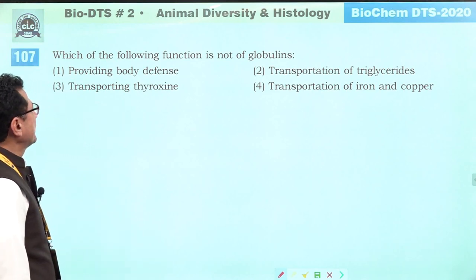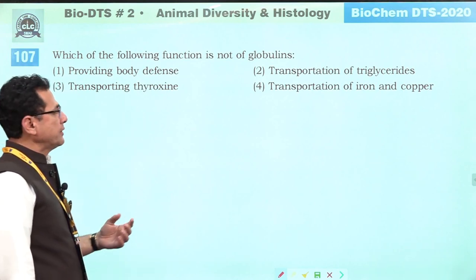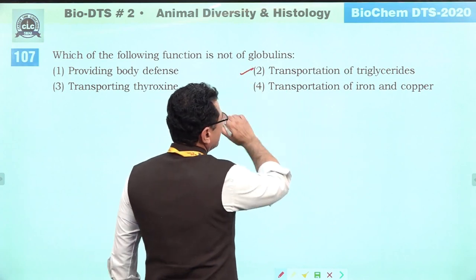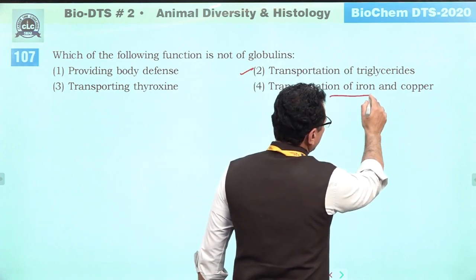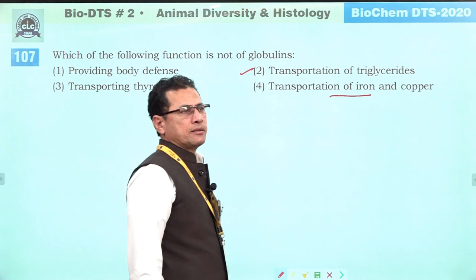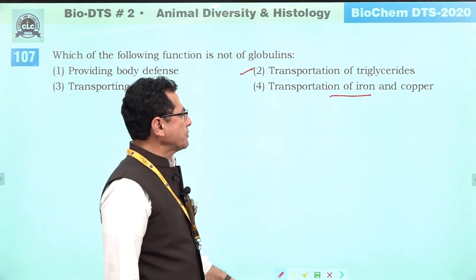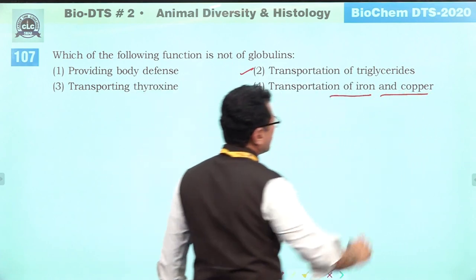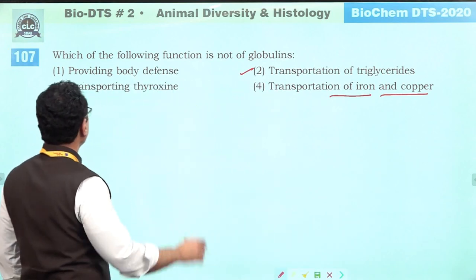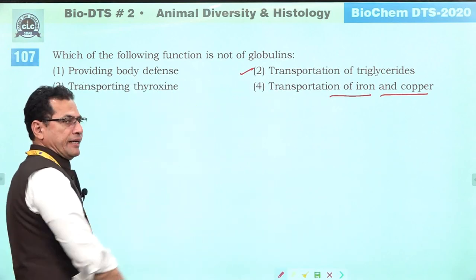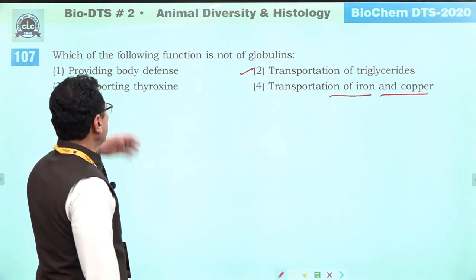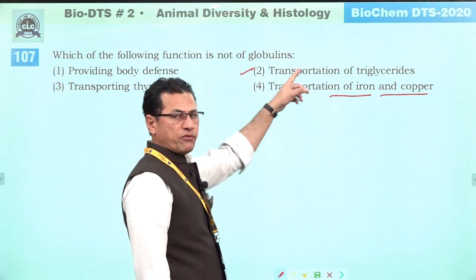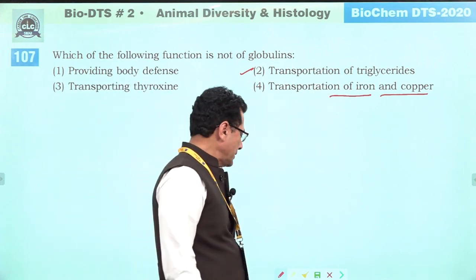Which function is not performed by globulins? Globulins do not help in transportation of triglycerides. They help in transport of iron and copper (ceruloplasmin, transferrin), thyroxin binding globulin, and body defense by antibodies. Transportation of triglycerides is not their function. Answer is two.